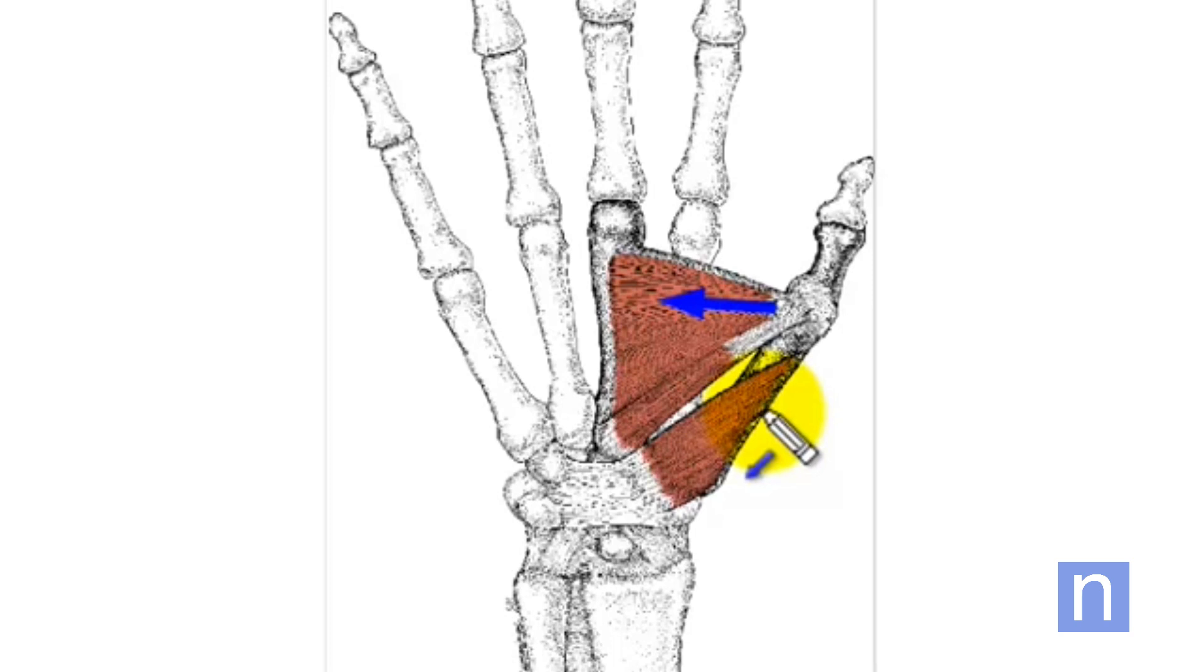So the opponens pollicis is the muscle which brings your thumb, the tip of your thumb, into contact with your fingers. It's this muscle that separates us from all other animals on earth apart from the great apes.